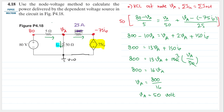However, the question is not asking about Va but about the power delivered by the dependent voltage source. Remember that power equals voltage multiplied by current. The voltage is 75·i_sigma, and the current through the dependent source is (Va + 75·i_sigma) divided by 25.